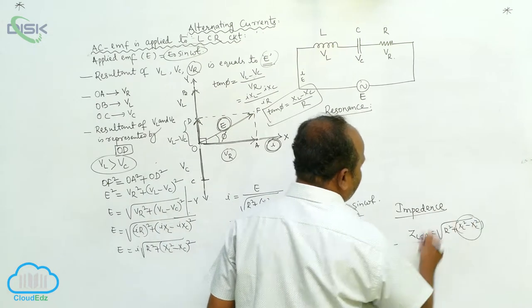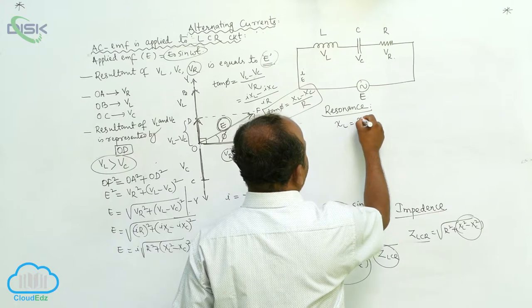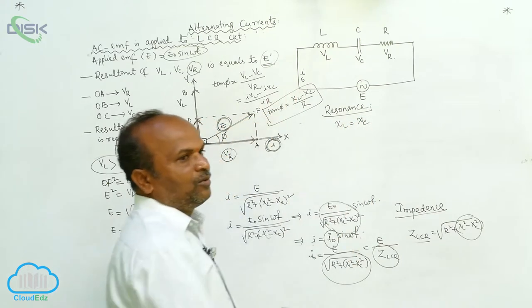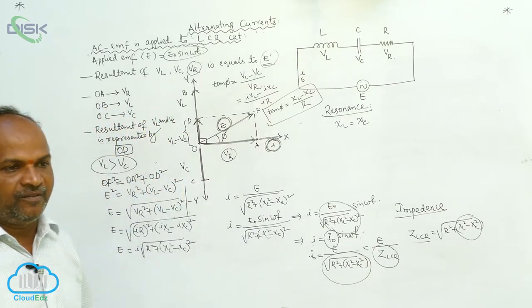Whenever they are under resonance, XL must equals XC. The total circuit current and voltage, all the physical quantities are under same phase.